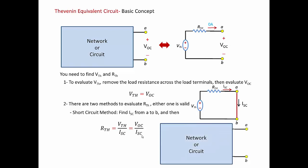So if you have your network, to find R-Thevenin using the short circuit method: first evaluate VOC, which was done in step one. Then short circuit terminals A to B, find I short circuit using any technique you want, and once you solve for I short circuit, R-Thevenin equals VOC over I short circuit. That's the intuitive explanation for why this works on the big network.